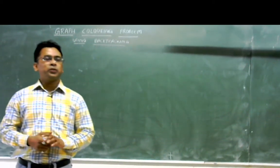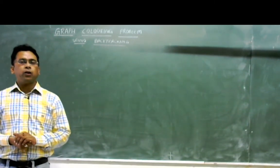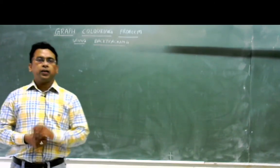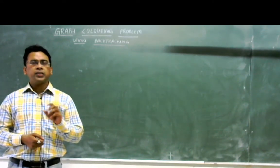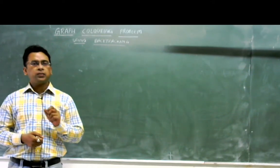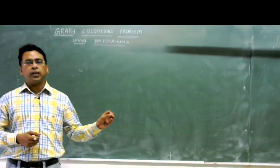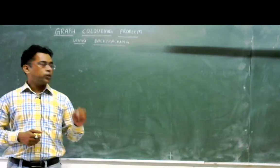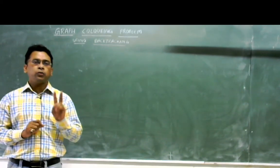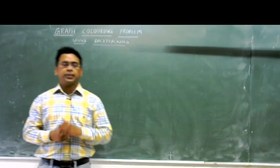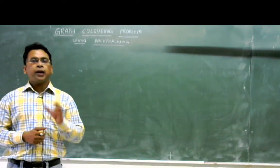Hello students, today I am going to teach you about the graph coloring problem. This problem is related to and solved with the help of the backtracking technique. In the graph coloring problem, we have to color the graph's vertices in such a way that no two adjacent vertices should be of the same color. You are given a graph and a certain set of colors, and you have to color that graph using those colors.